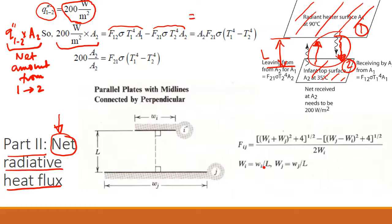If you simplify this, and we have done this in class, this is equal to A1F12 sigma T1 to the 4 minus T2 to the 4. Now using the reciprocity relation, A1F12 is equal to A2F21. So I can write A1F12 to A2F21.